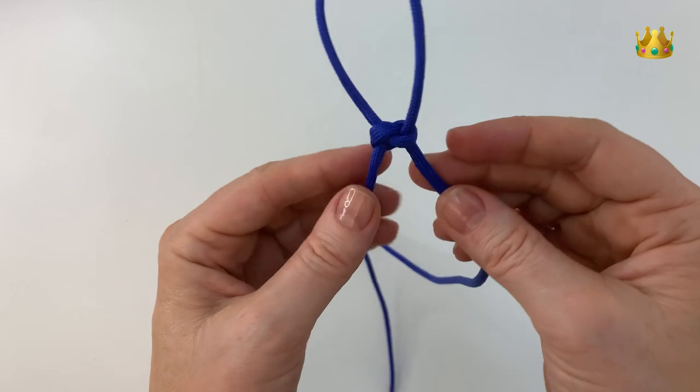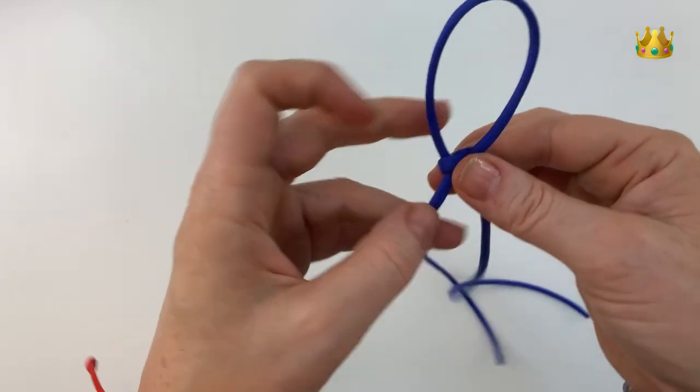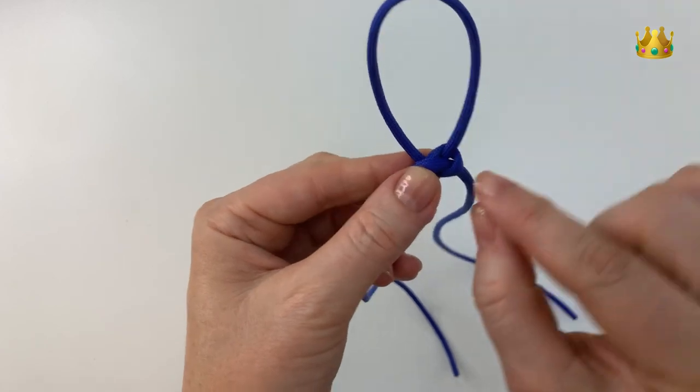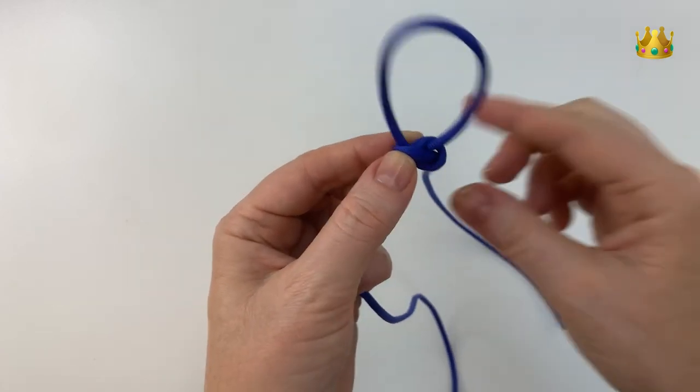Now at this point we're going to rotate it to the right just swapping the back to the front. Now with this little loop that's on the right hand side we're gently just going to loosen it just a little bit.